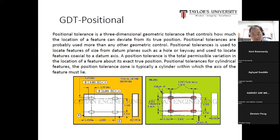Positional tolerance is used to locate features of size from datum planes such as a hole or keyway, and used to locate features coaxial to a datum axis. A position tolerance is the total permissible variation in the location of the feature about its exact position. Positional tolerance for cylindrical features: the position tolerance zone is typically a cylinder within which the axis of the feature must lie.